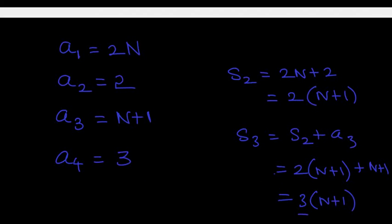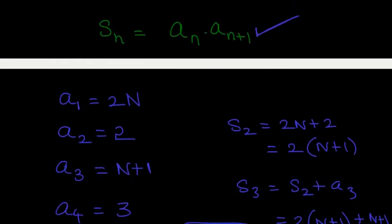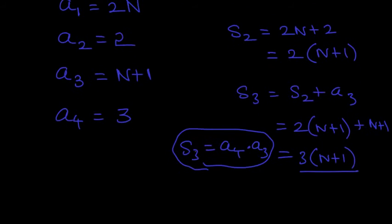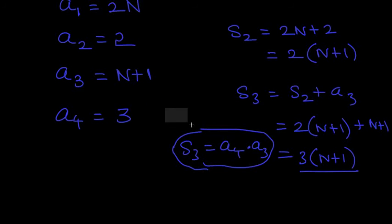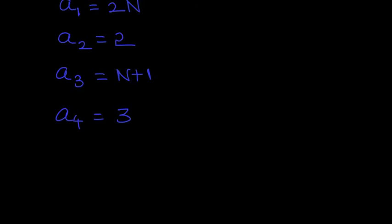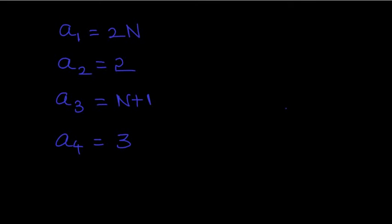Observe that S_3 equals 3 times (n+1), where 3 is a4 (the next term) and n+1 is a3 (the current term). So this satisfies the crucial condition S_n equals a_n times a_{n+1}, and also a_{n+2} equals a_{n+1} is satisfied too. We have found the base case. All we need to do is use the recurrence a_{n+2} equals a_{n+1} to generate the rest of the elements.